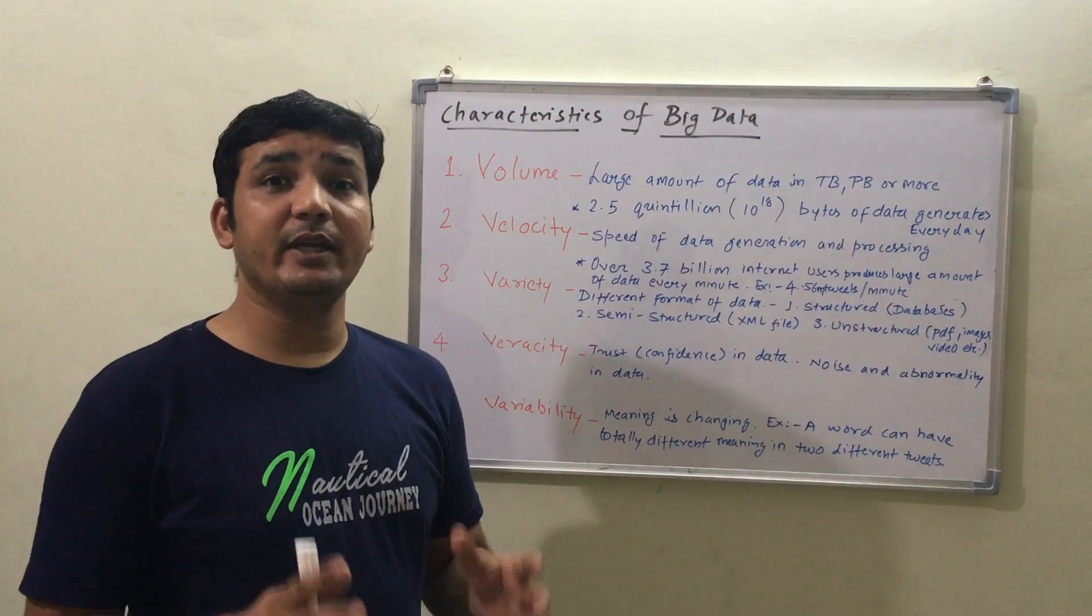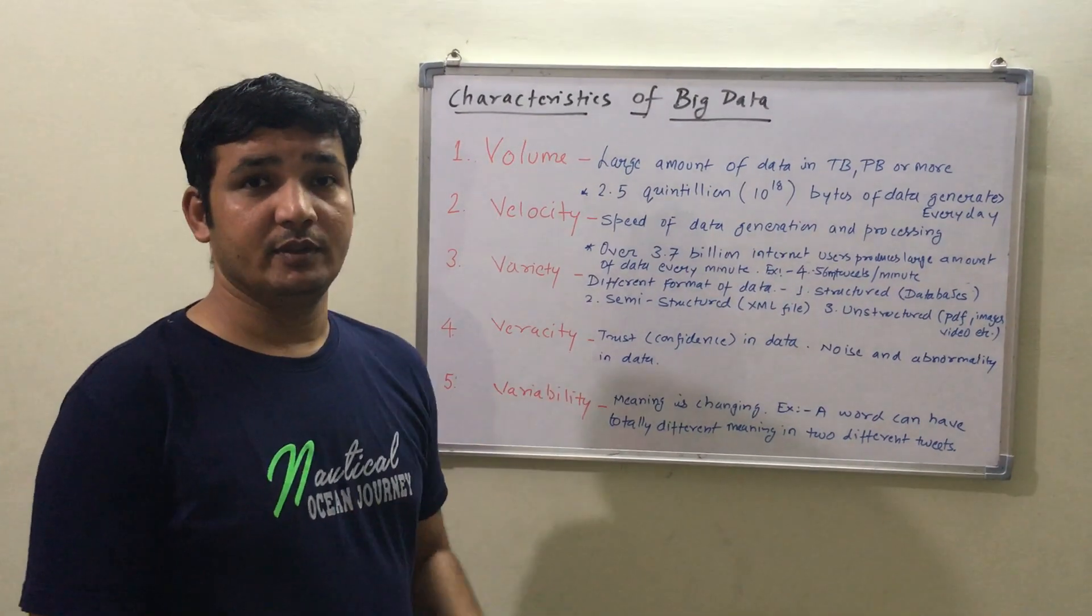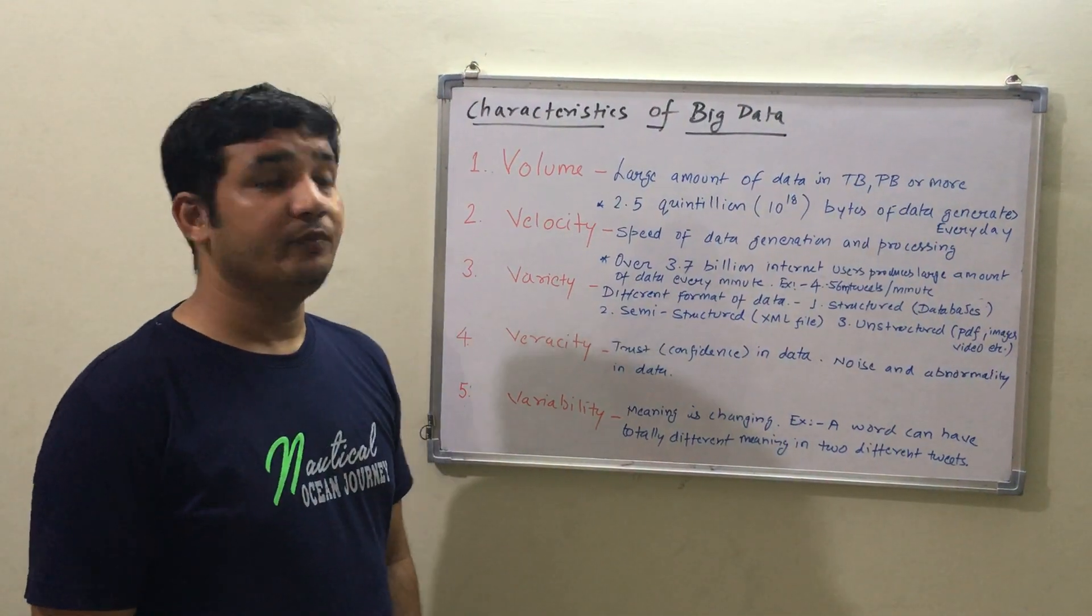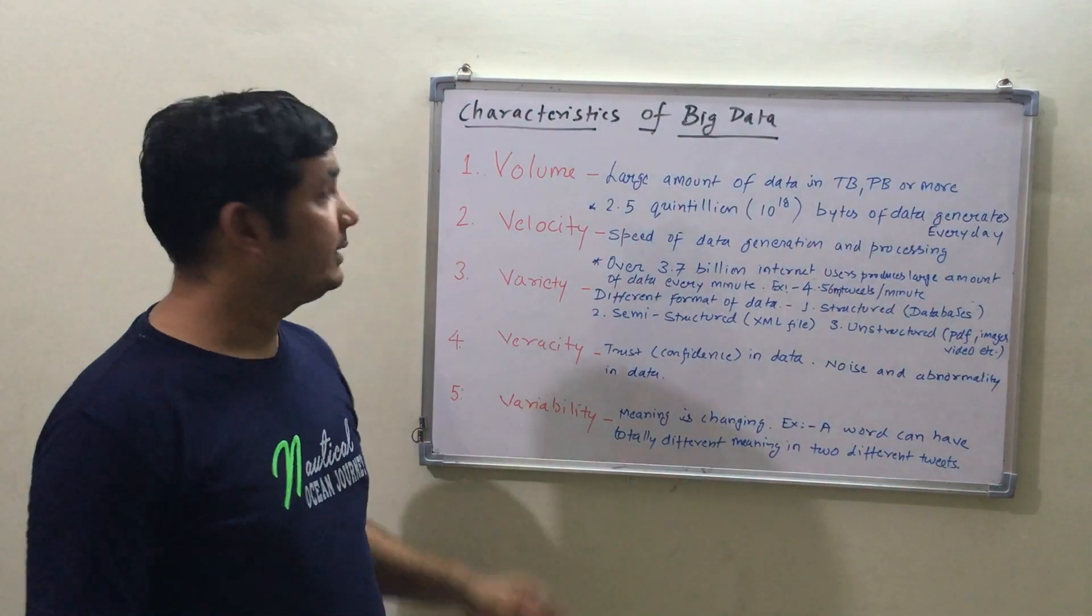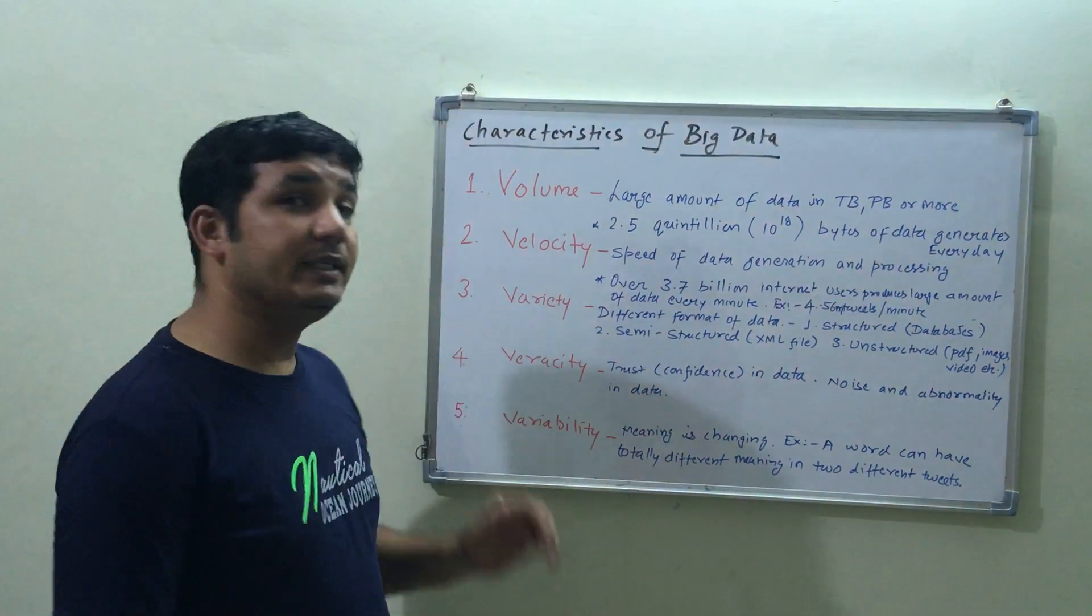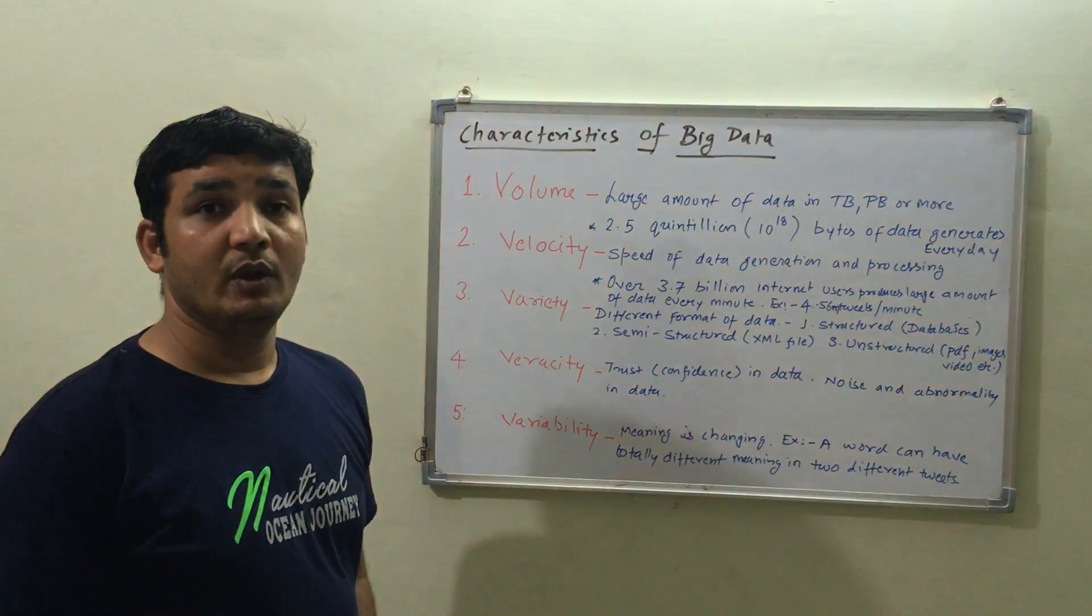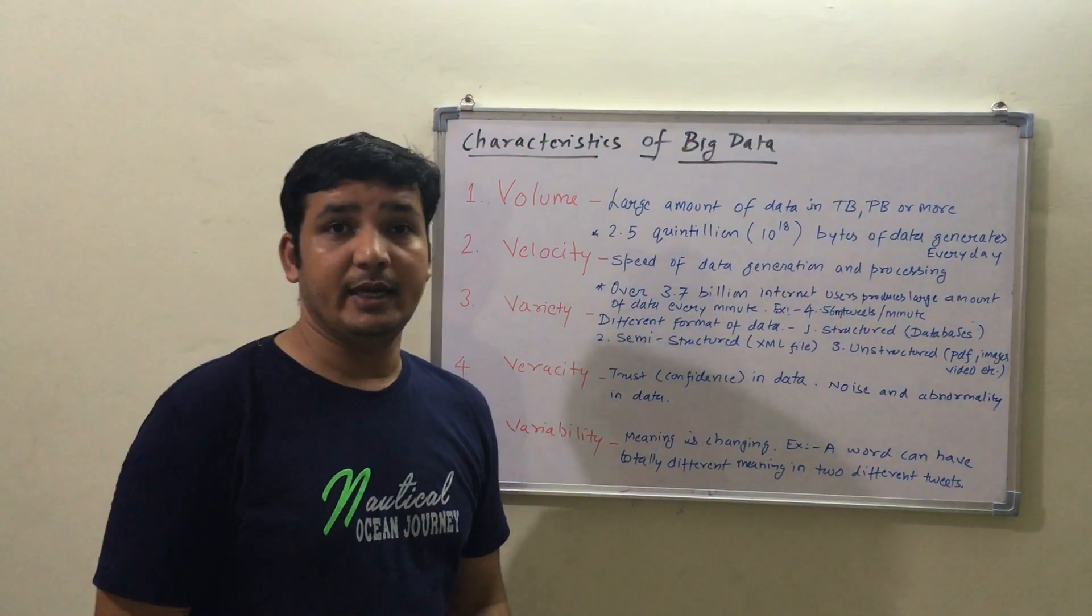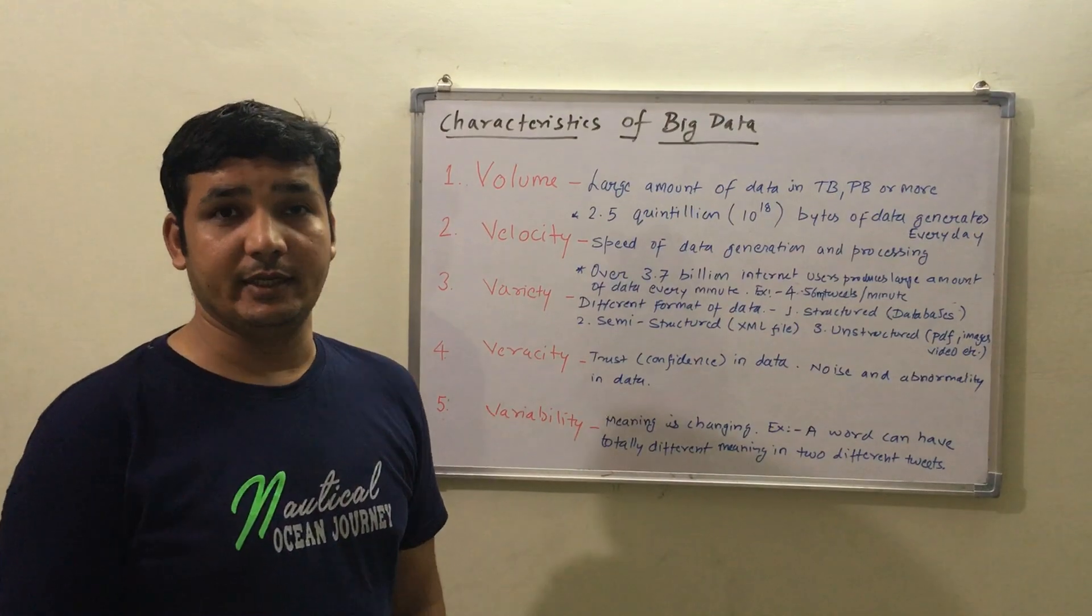The characteristics of Big Data are defined by various Vs. First is Volume, second is Velocity, third is Variety, fourth is Veracity, and fifth is Variability. One by one we will take all these characteristics and understand their meaning.